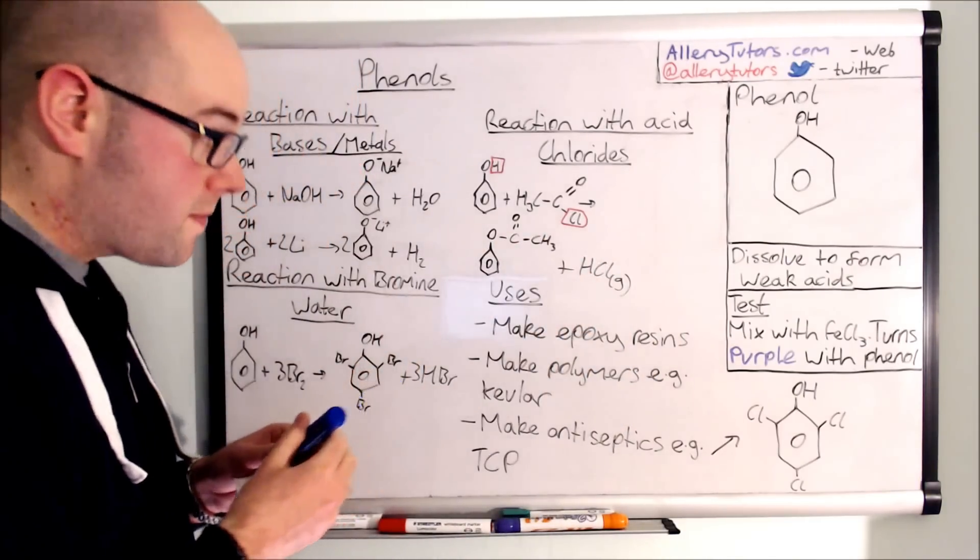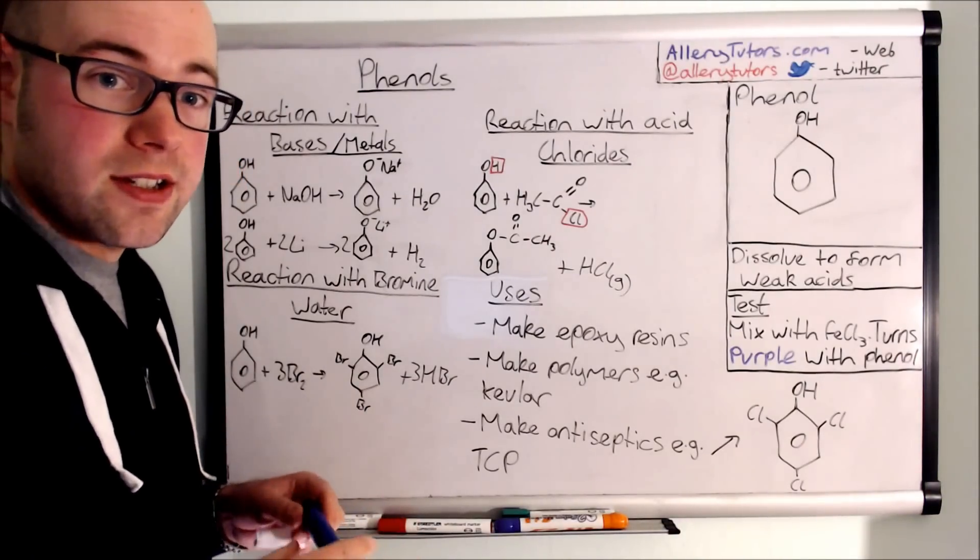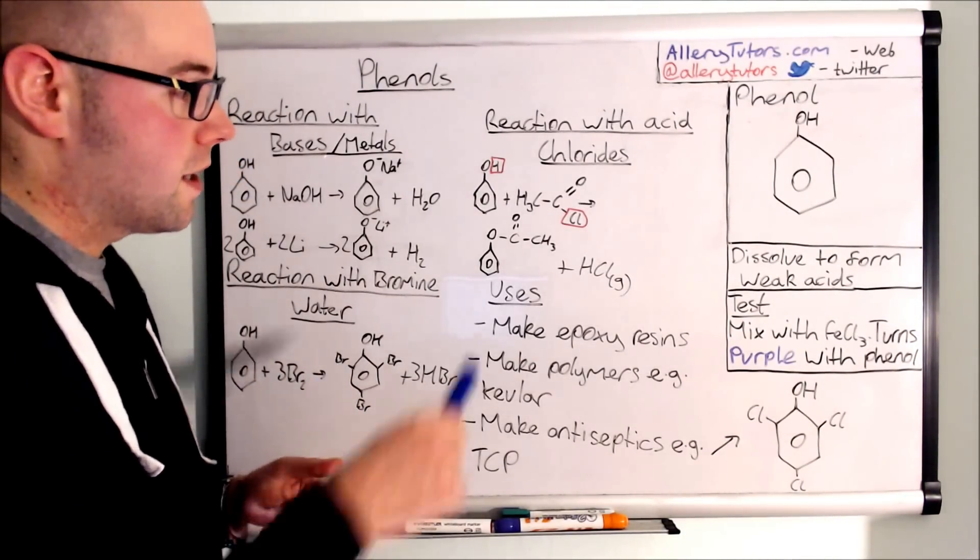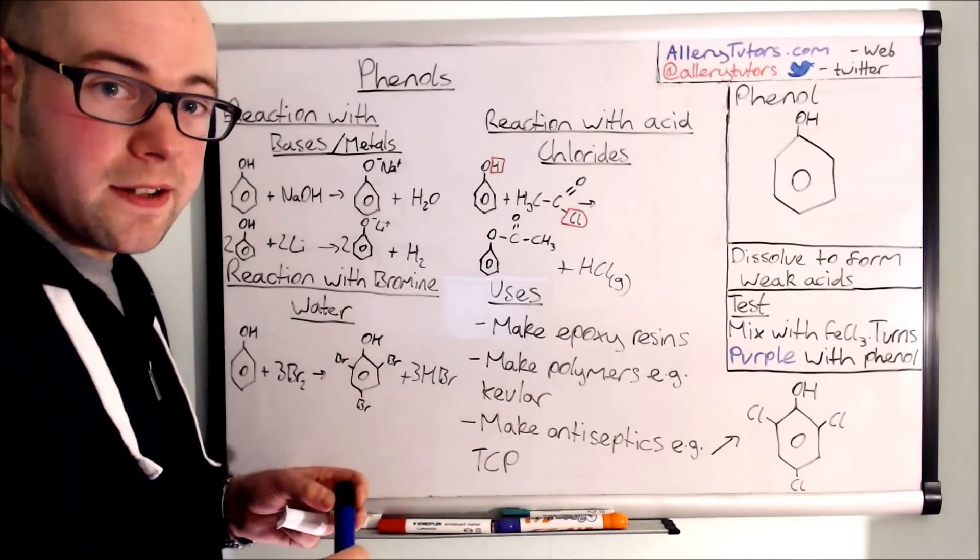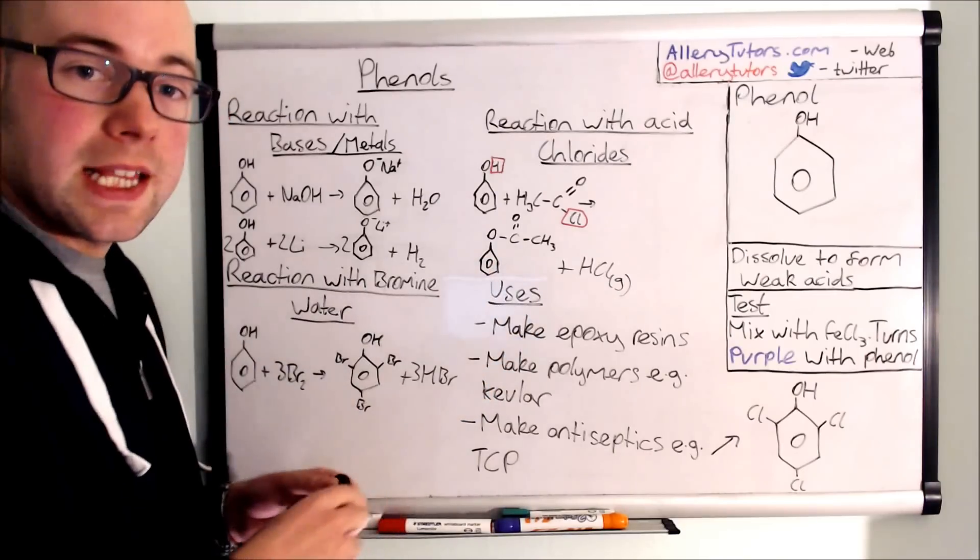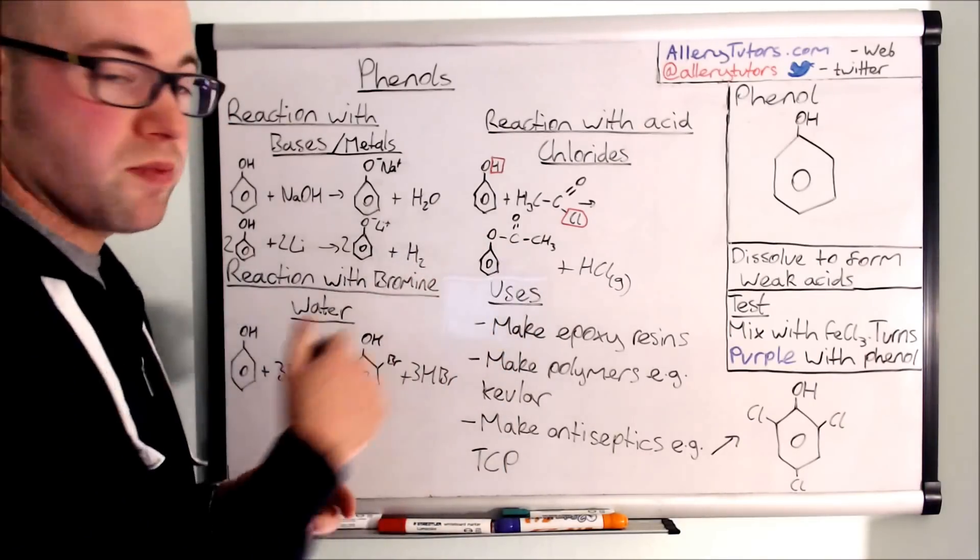The name of this is just an ester. Like any other ester, you name the alcohol bit first and then the acid bit. The alcohol bit in this case is phenyl, and then this bit here is ETH because it's two carbons. So it's phenylethanoate. That's the name of this product here.